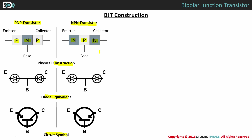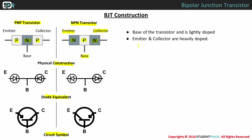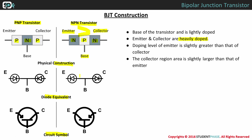The middle region is the base region and is lightly doped. The remaining two regions are emitter and collector, which are highly doped. Doping level of the emitter is slightly higher than that of the collector. The collector region area is slightly larger than the emitter. The diode representation of a transistor is as shown, and is nothing but two PN diodes connected back to back.